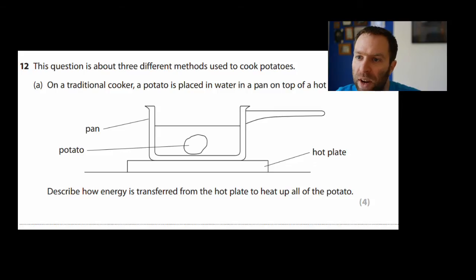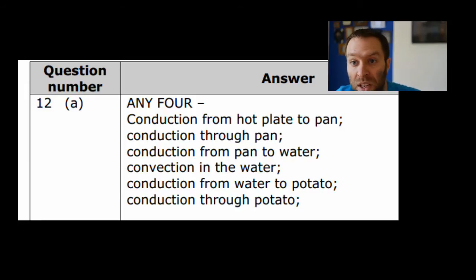Another question is the potato question, which is another much-hated question. Describe how energy is transferred on a hot plate to heat up the potato. Here we've got a saucepan, a hot plate, some water. You can talk about the different heat transfer mechanisms in the different bits of the heating. There's a big list of where conduction is: conduction from the hot plate to the pan, conducting through the pan, from the pan to the water, then convection in the water, and then conduction from the water to the potato, conduction through the potato.